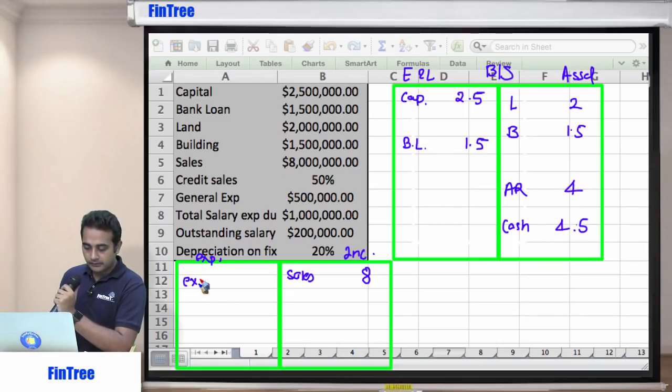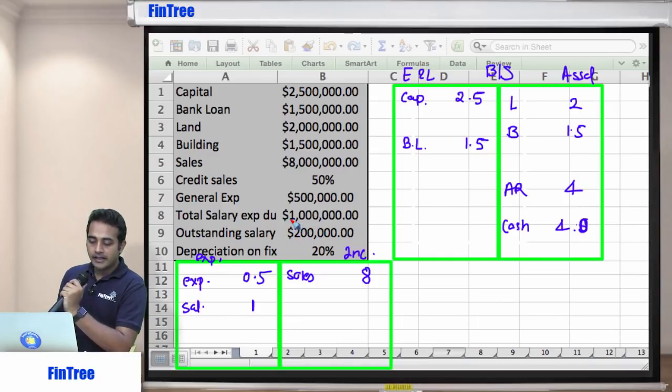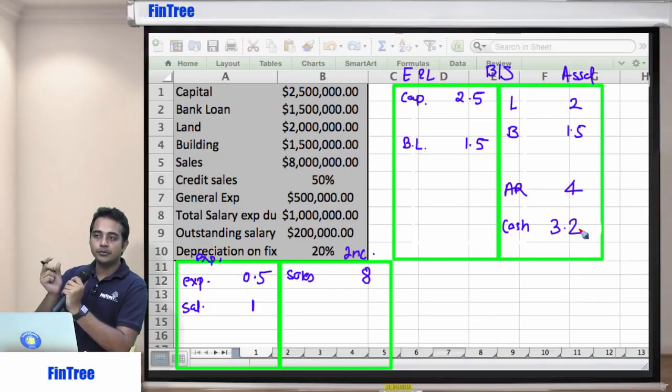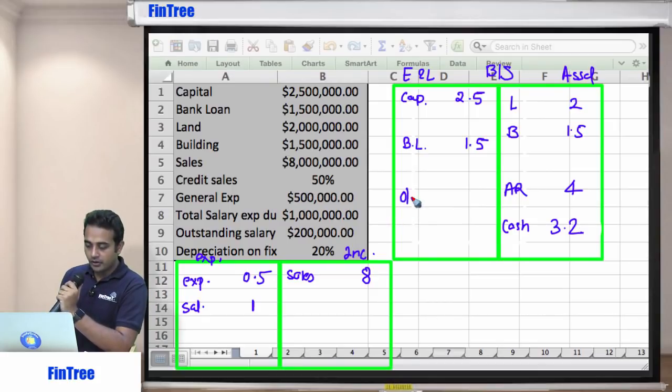General expenses, 0.5. Second effect, cash now becomes 4. Then total salary expenditure during the year, 1 million. So let me write down salary 1. But have we paid entire amount in cash? No. We have paid cash. Total salary expense 1. But 0.2 is still outstanding. So how much did we pay in cash? 0.8. So your cash now will become 3.2. This is cash payment. So it will reduce, it will become 3.2. But how about that remaining 0.2? It's a liability. So we will show outstanding salary or current liability of 0.2.